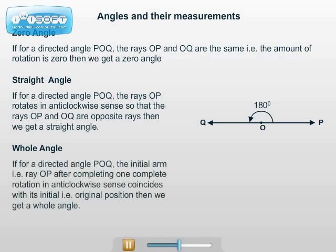Whole angle: If for a directed angle POQ, the initial arm (ray OP) after completing one complete rotation in the anticlockwise direction coincides with its original position, then we get a whole angle.